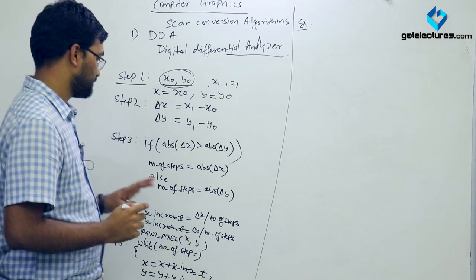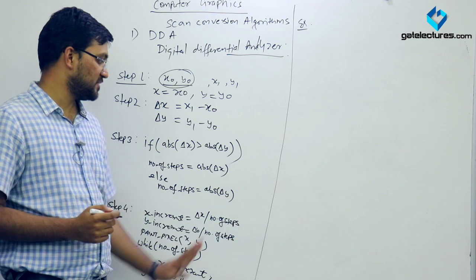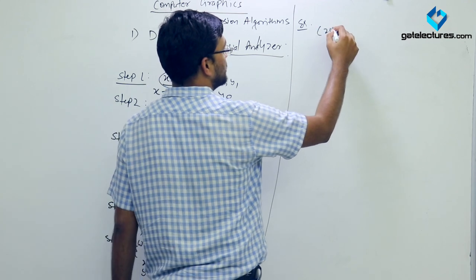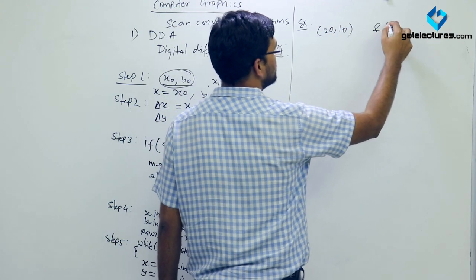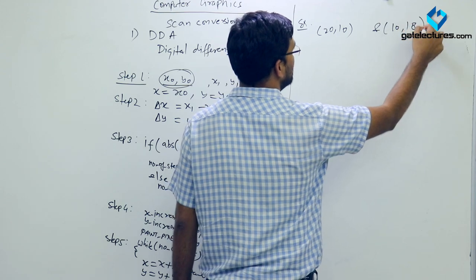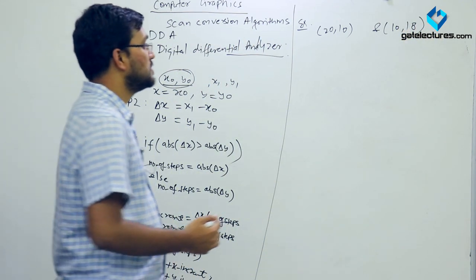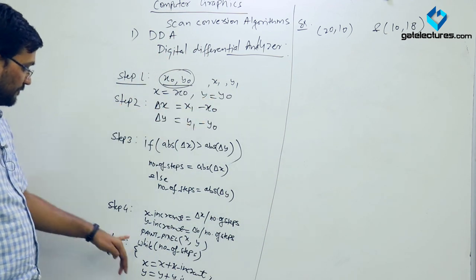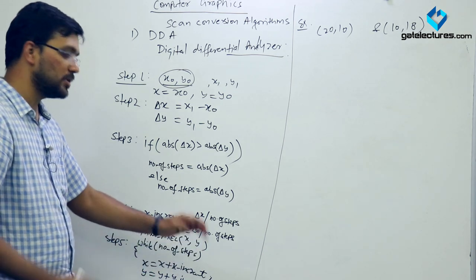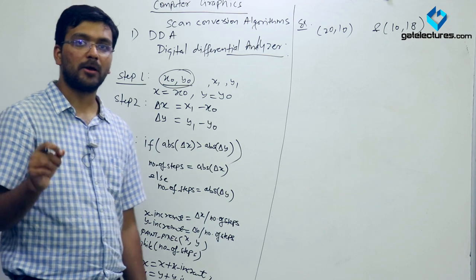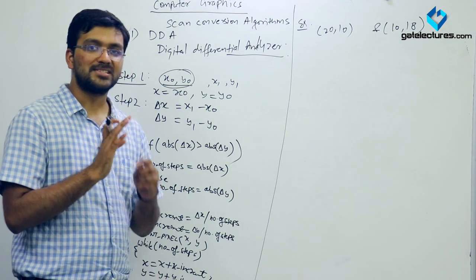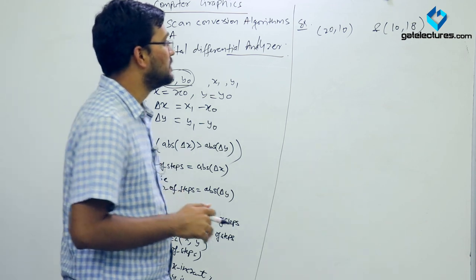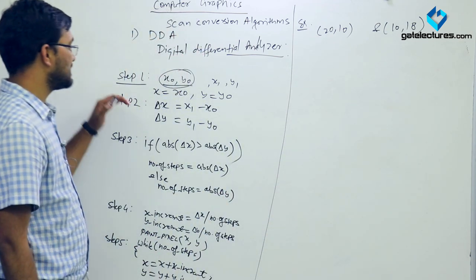Now we will see the application of the DDA algorithm which we have just studied. I'll be giving you two points: (20, 10) and (10, 18). We'll start the DDA algorithm on these two points. Our target is to find out the pixel locations — the pairs of X and Y where we are going to paint. Once we have the set of pixels, we'll start drawing the line.